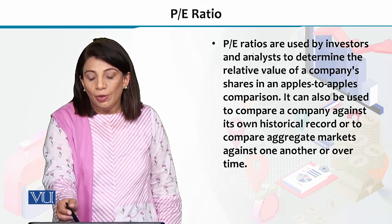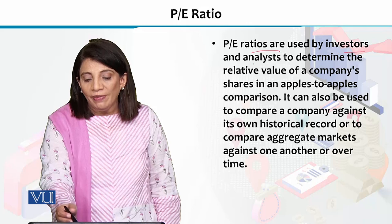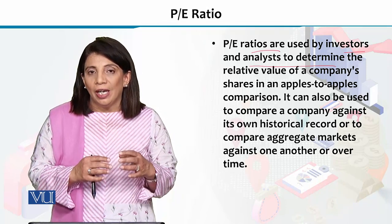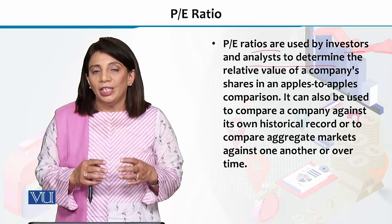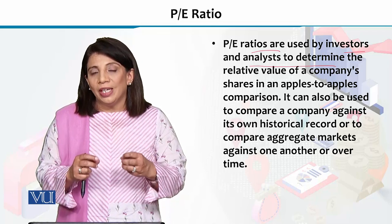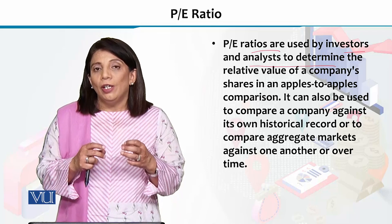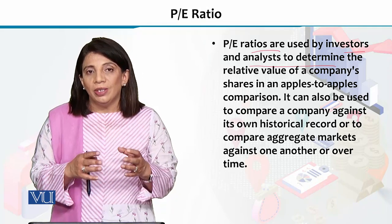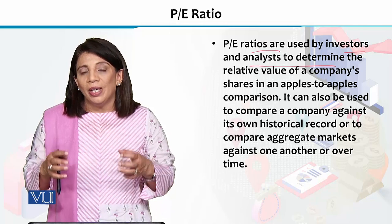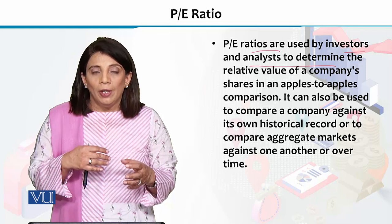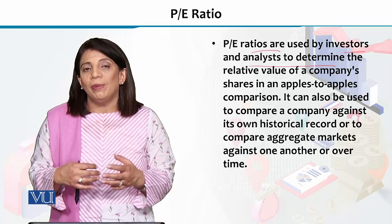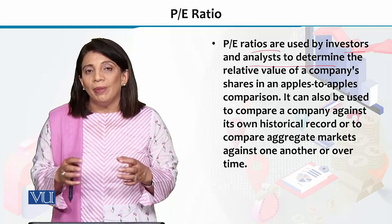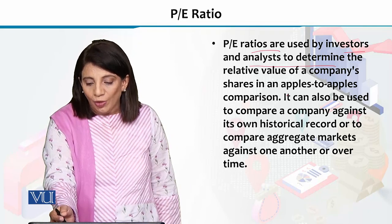The PE ratio is used by investors and analysts to determine the relative value of a company's shares. When comparing companies, keep in mind that you should compare similar companies — for example, a very large company versus a small company of only 5 or 10 people. Financial performance indicators like PE ratio, quick ratio, liquidity ratio, or leverage ratios cannot be meaningfully compared across very different companies. It is essential that when you compare, you compare among similars.